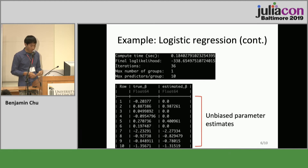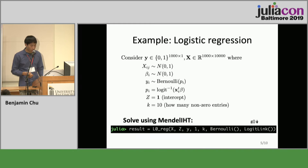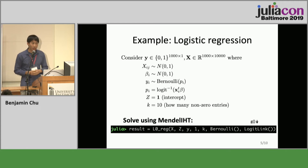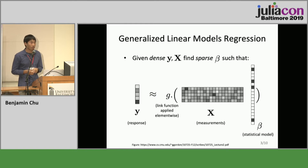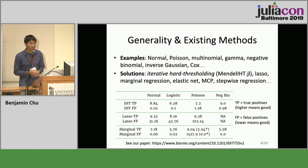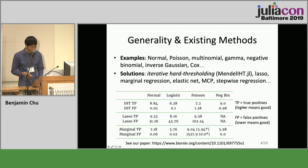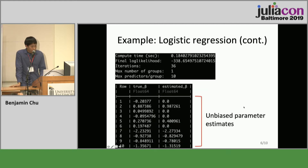In this example we assumed k equals 10 and that we know that. In practice we don't know the true number of variables affecting the response. Our package handles that by cross-validation, which works very well. I don't have time to go over the details, but you can see them in our paper.